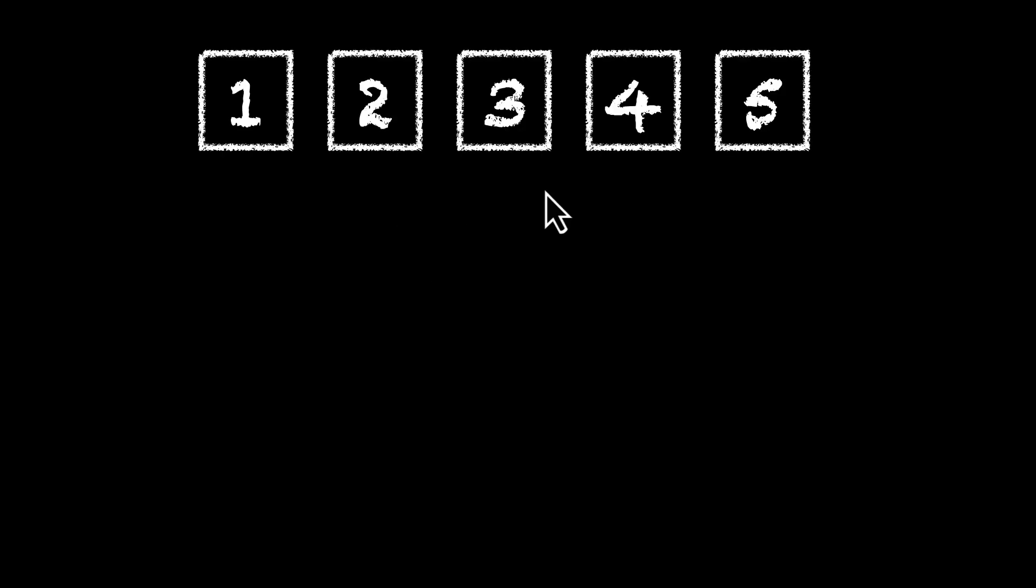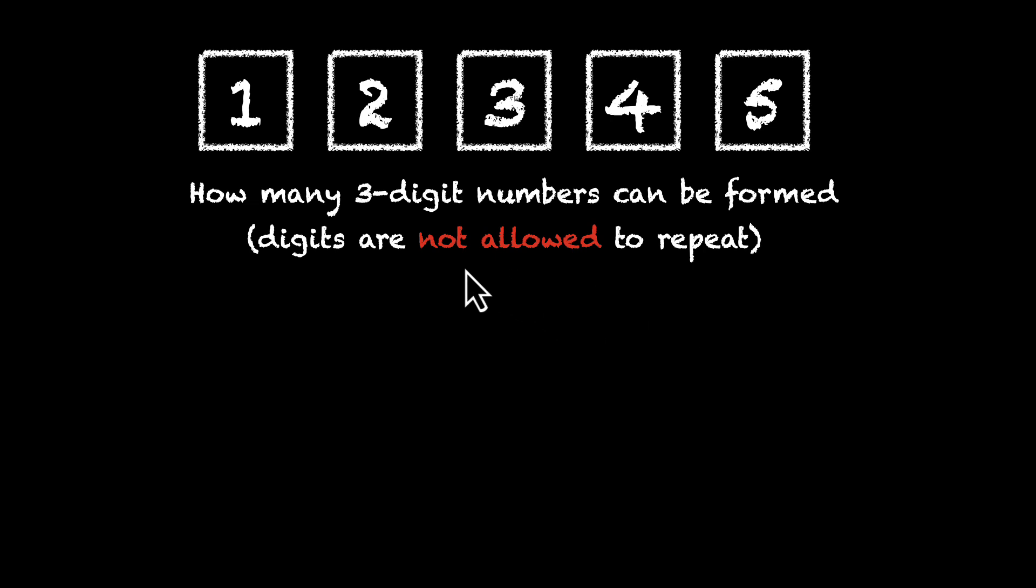Here's the first one. We have 1, 2, 3, 4 and 5. We have these 5 digits. Using them, we'll make some 3-digit numbers. And our job here is to count how many 3-digit numbers can be formed. We're given that the digits are not allowed to repeat. So if you have used 4 once, you cannot use it again. For the next digit, you'll have to pick something else.